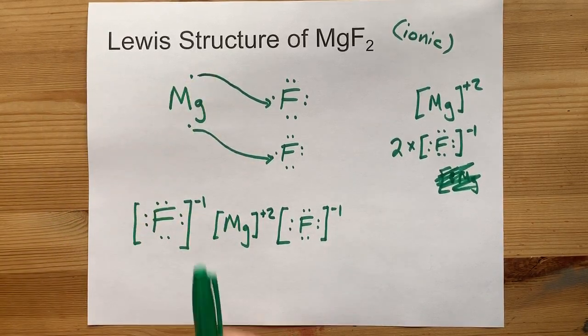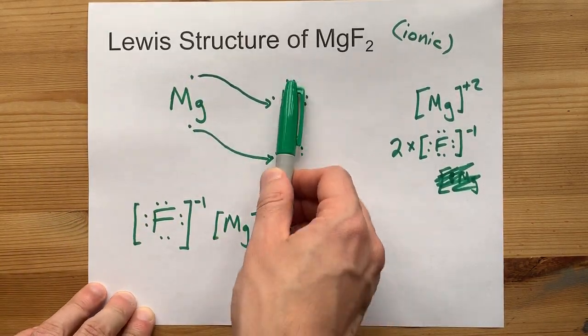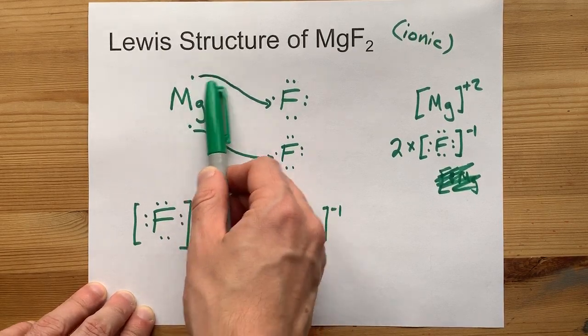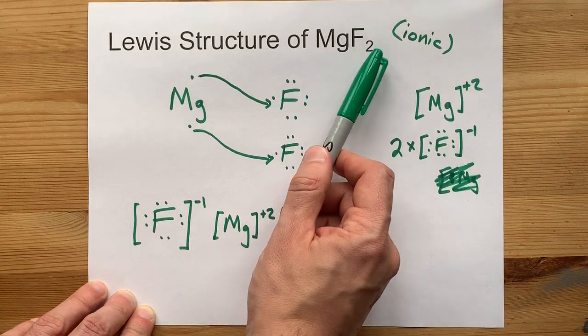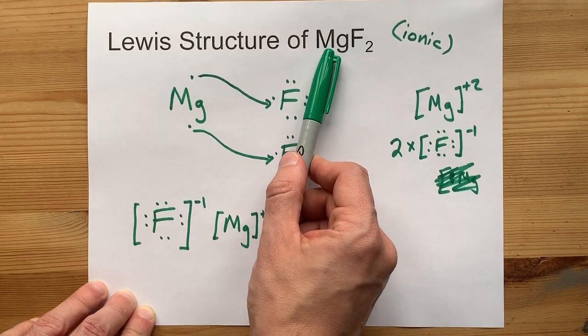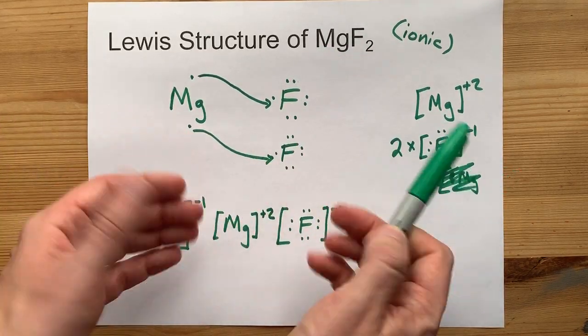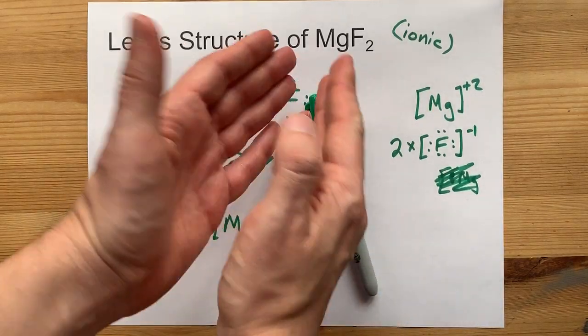Let me point the last thing out here. You needed 2 fluorines to accept all the electrons that magnesium brought with it. That's why the formula is MgF2, because you need 2 F's for every Mg. Not a coincidence. That's the reason. That's the formula.